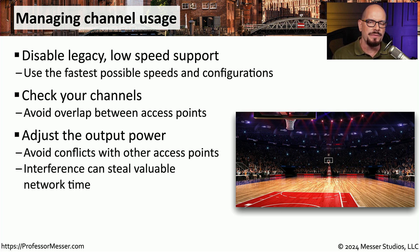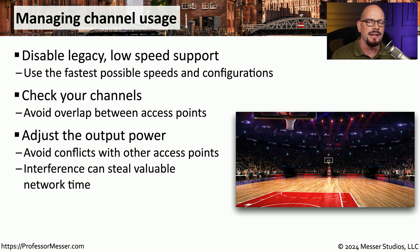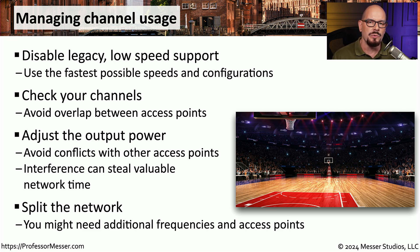Interference is one of the biggest problems on a wireless network, and it can come from many sources, but often the interference is from other access points themselves. Some access points may be covering a very small area but have their output power set to maximum. In those cases, you may be able to turn down the output power and still provide wireless access to devices in the area, limiting the interference created for other nearby access points. It's not unusual to split the wireless network into smaller access points separated from each other, providing wireless access while distributing the load across two different access points using different frequencies.